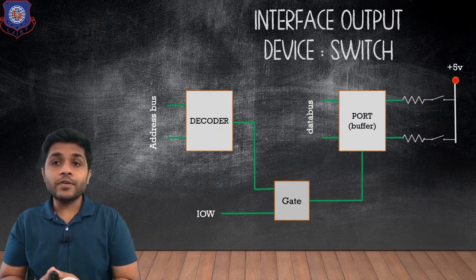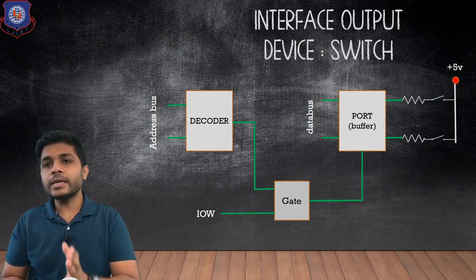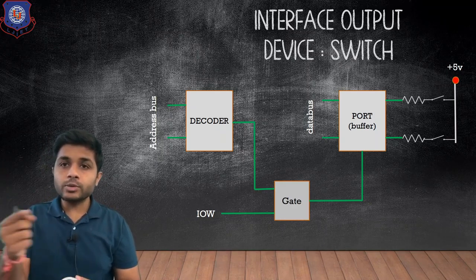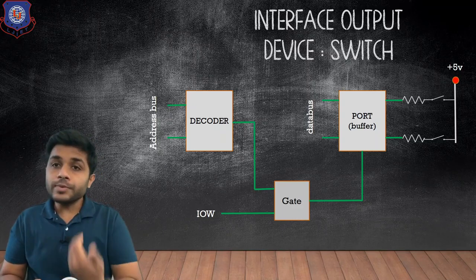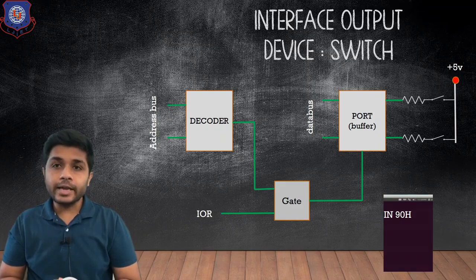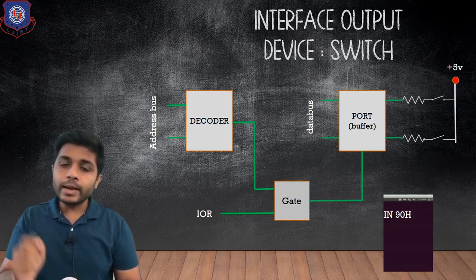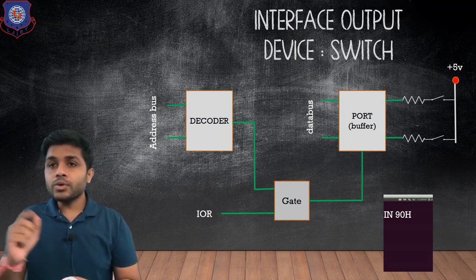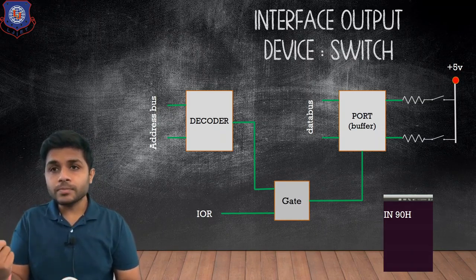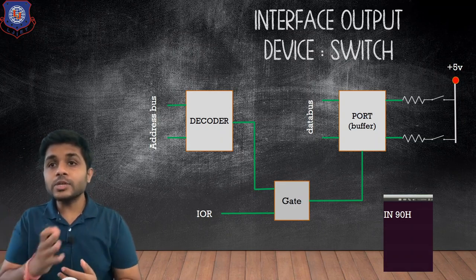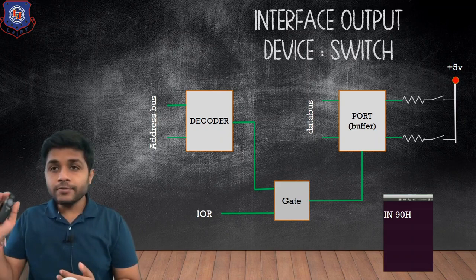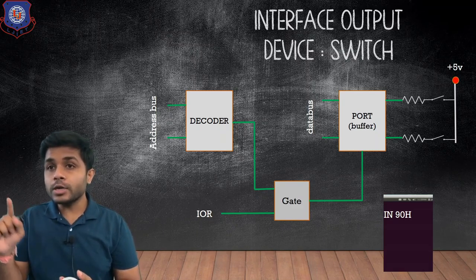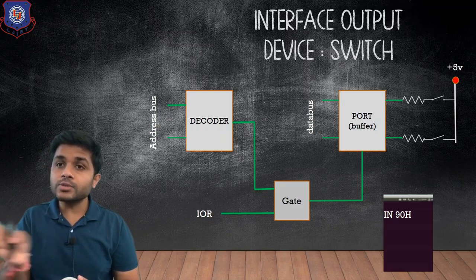Now let's see why we are using buffer as input port. On the other side of the port, switches are connected to 5 volts and to the buffer. To read the status of the switch we write the instruction IN 90H — 90H is the address of the input port. When you execute IN 90H, the status of the switch is transferred to the accumulator. Depending on the status of the switch — whether it is on or off — we continuously receive a high or low signal. If the switch is closed we receive 5 volts (1 bit); if the switch is open we receive 0 volts (0 bit).